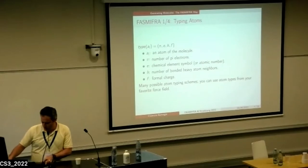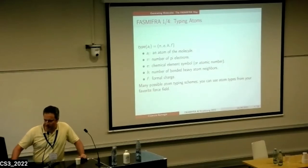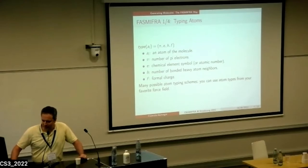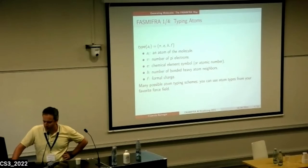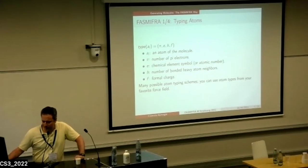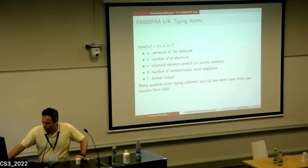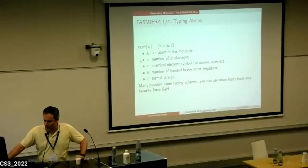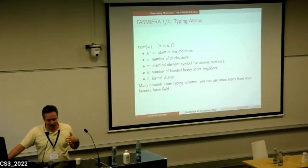For my way of generating molecules, which I call the fast assembly of SMILES fragments, first you need to type atoms. Here I show an example atom typing scheme inspired by the atom pairs scheme. You can encode an atom as a tuple with four members: the number of pi electrons, the atomic number, the number of bonded heavy atom neighbors, and the formal charge. There are many possible atom typing schemes in the literature, and you can use the one from your favorite force field.